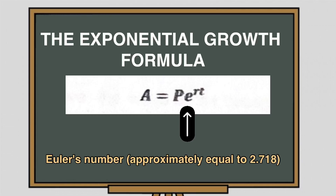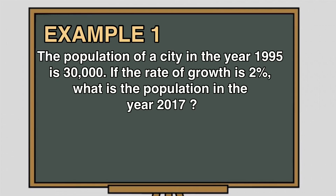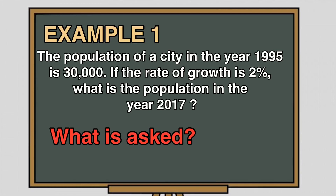Now let's apply the exponential growth formula using an example. Example number one: the population of a city in the year 1995 is 30,000. If the rate of growth is 2%, what is the population in the year 2017? Recall that in dealing with any mathematical problem, we have to start with identifying what's being asked. Here, we are asked to find A, which is the population in the year 2017.